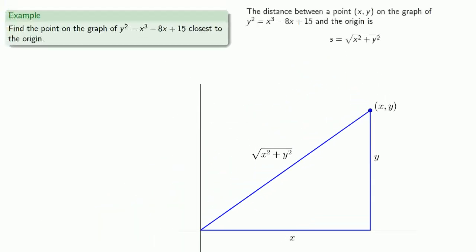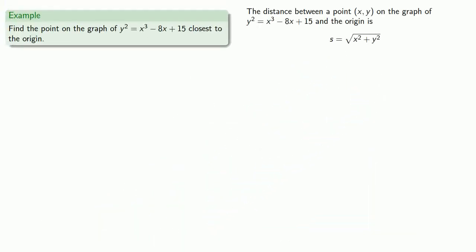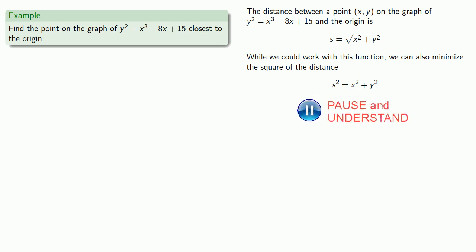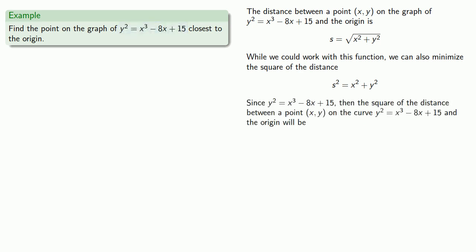Now we'll introduce a little simplification. While we could work with this function, since we know we're going to differentiate and the derivative of a square root is complicated and messy, we can instead minimize the square of the distance. Since y squared equals x cubed minus 8x plus 15, we can replace the y squared with this expression. Then the square of the distance between a point on the curve and the origin is going to be...